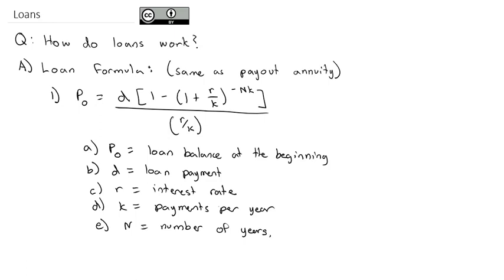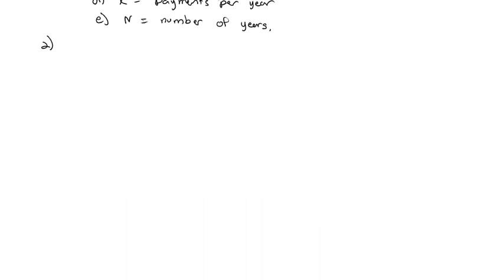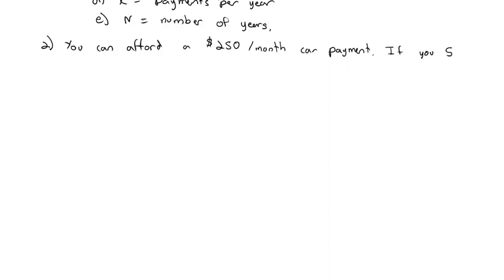With loans, there are really two different situations: if you can afford so much per month, how big of a loan can you get? And if you owe a certain amount, how much do you have to pay to pay it off by a certain point in time? Let's look at both examples. Say you can afford a $250 per month car payment, and your five-year loan has a 2.5 percent interest rate. How much car can you afford?